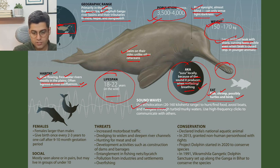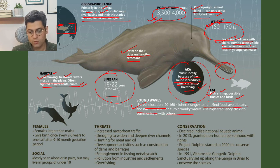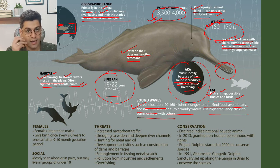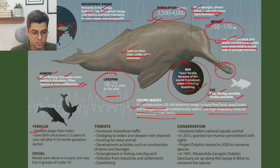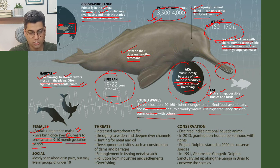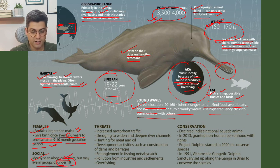They use echolocation — using sound to hunt, find food, avoid boats and navigate through turbid murky waters. They use high-frequency clicks to communicate with others. Females are larger than males. They give birth once every 2 to 3 years to one calf after a 9 to 10 month gestation period. They are mostly seen alone or in pairs, but many live in groups of under 10.